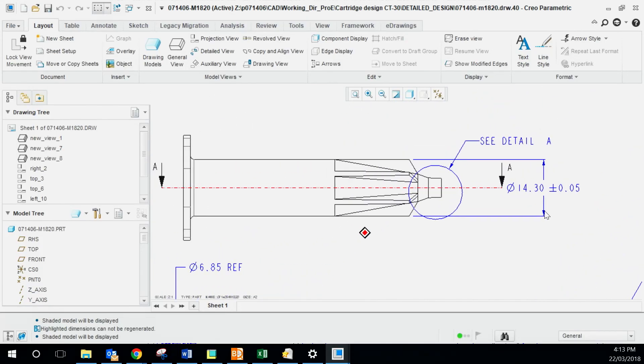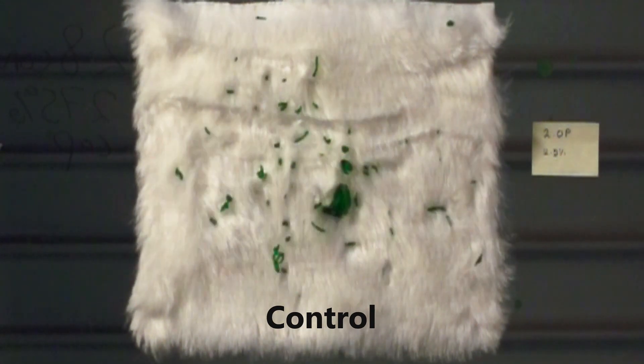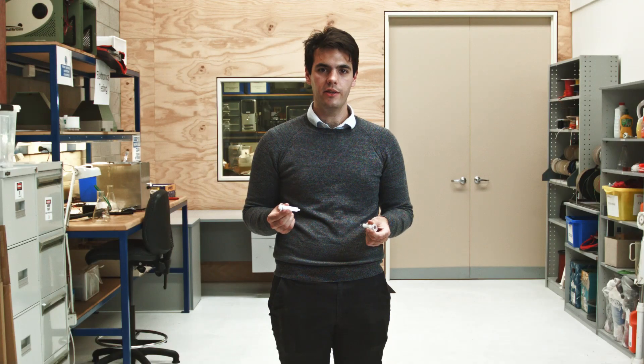After tooling we received samples and validated that they were actually performing as well as our concept validation. The improvements that we saw in the cartridges reduced our gel splatter from 280 millimeters to 40 millimeters. We've now started mass producing these cartridges which are being used in the field.